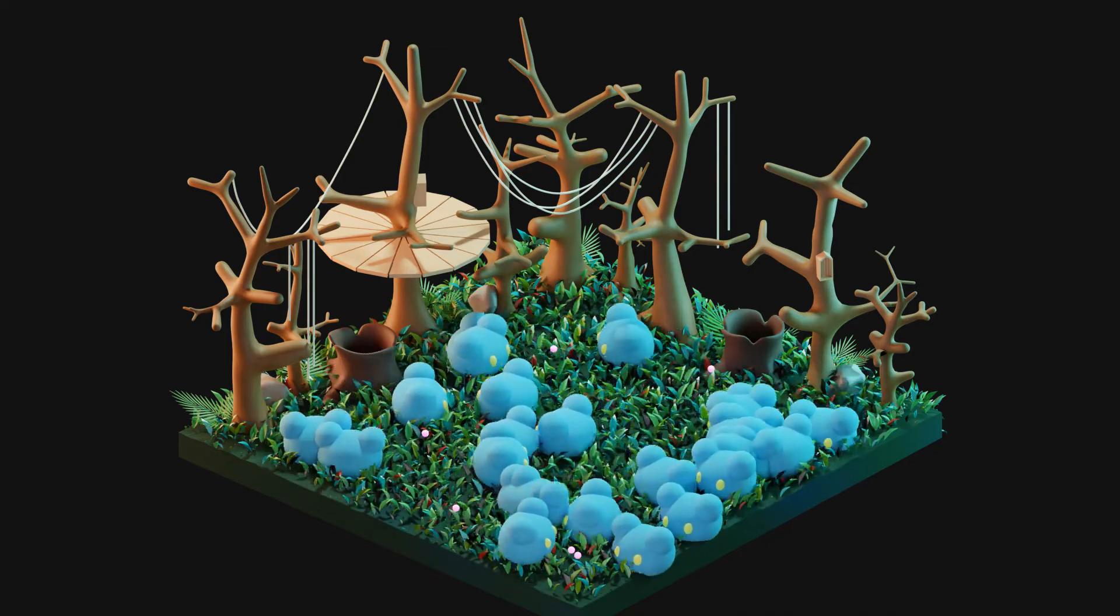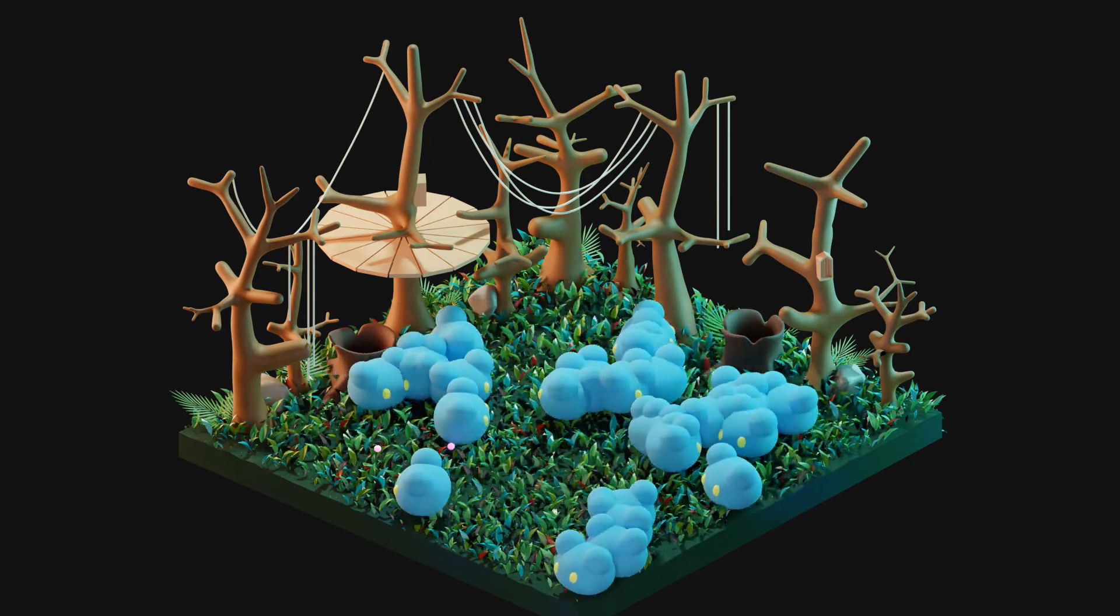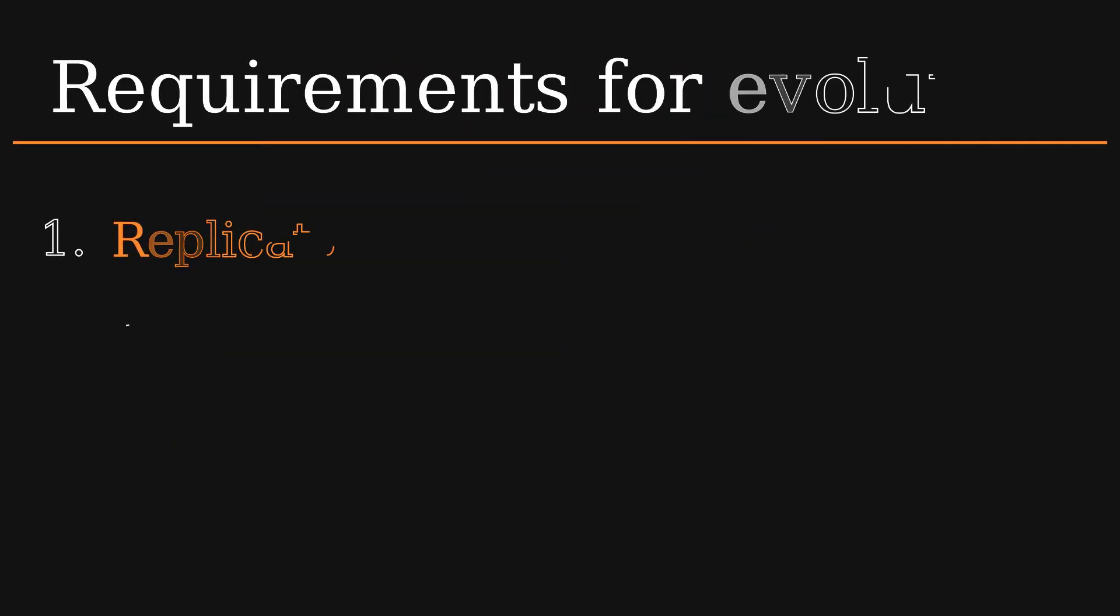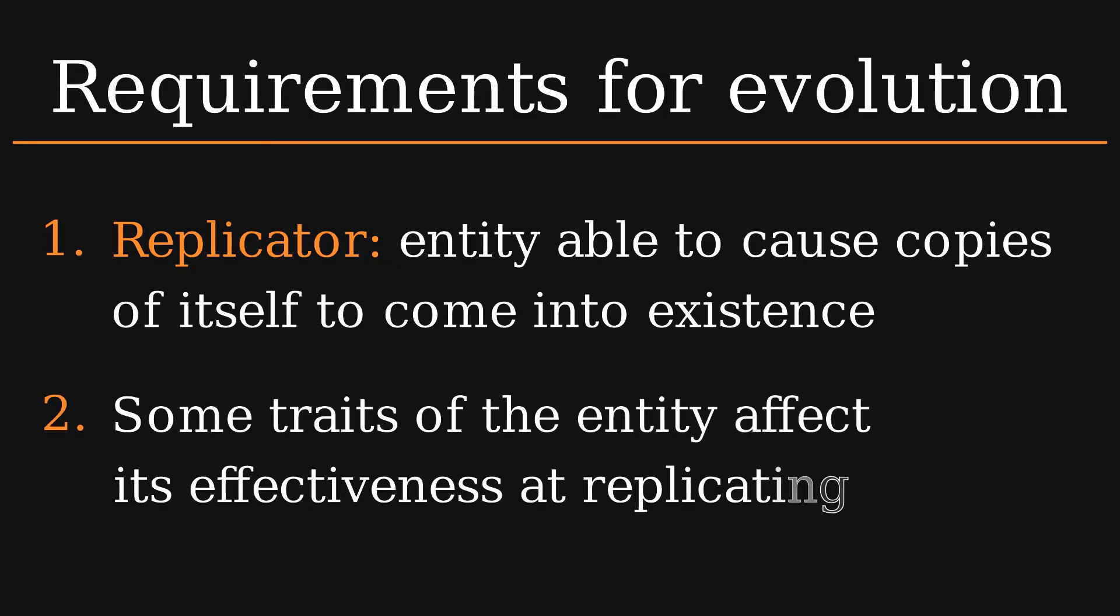As you'll notice, there's not much evolution going on right now, and that's because we haven't fulfilled the second requirement for a system to be evolutionary. We need our bobs to have traits that make them better or worse at replicating.